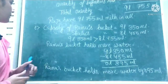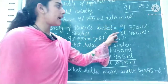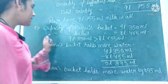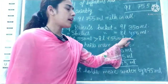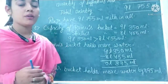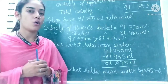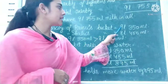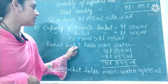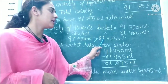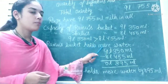Capacity of Ramu's bucket is 9 litres 350 millilitres, and capacity of Shalu's bucket is 8 litres 455 millilitres. Now we compare the two buckets. Since 9 litres is greater than 8 litres, Ramu's bucket holds more water — 9 litres 350 millilitres is greater than 8 litres 455 millilitres, so Ramu's bucket holds more.